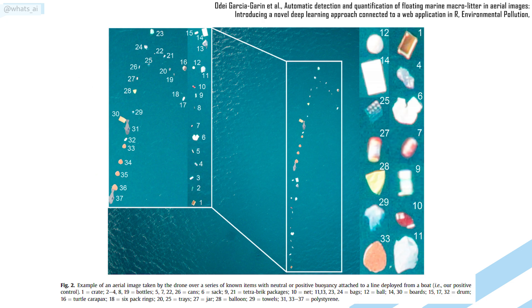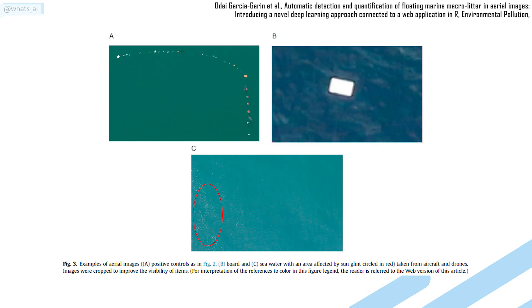They train their algorithm with aerial images like this one, taken by drones and aircraft, with annotations made by the same professionals that usually manually analyze them. This is a challenging task even for deep learning, because of all the possible variations in colors and sun reflections, as you can see here.